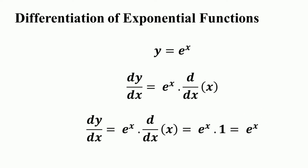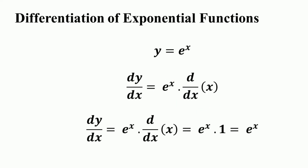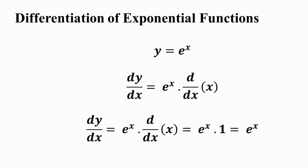In short, the derivative of a natural exponential function is equal to the original natural exponential function times the derivative of the exponent. Here the original natural exponential function is e raised to the power x, and the derivative of the exponent x equals 1, so 1 into e raised to the power x equals e raised to the power x.